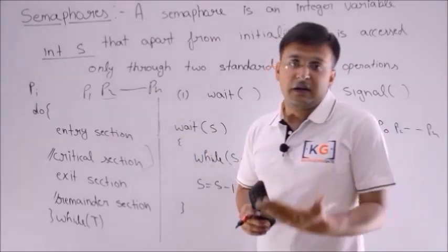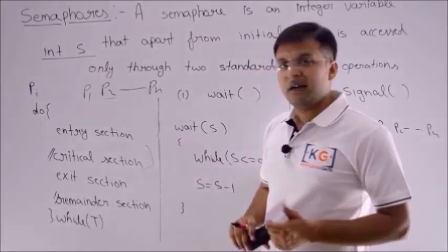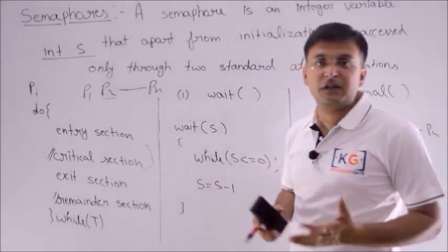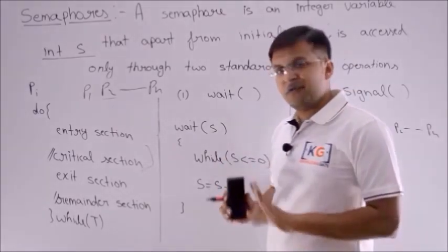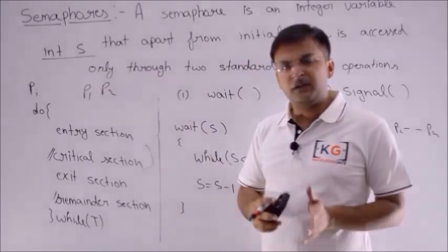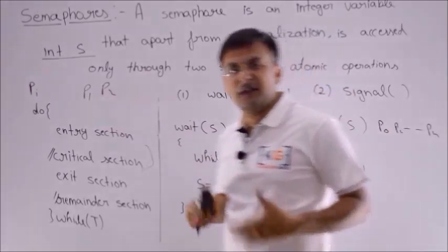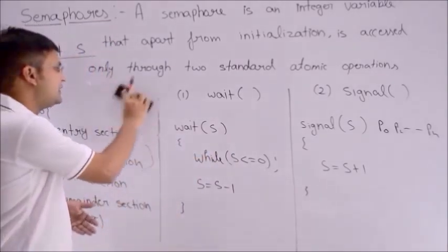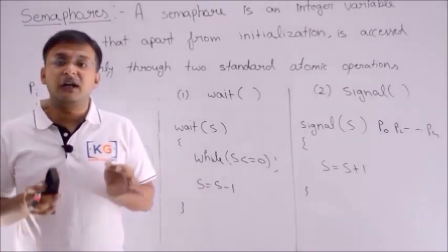To solve this, I tried two or three logics — basically three algorithms. First, we used a turn variable, but progress was not achieved. Then in the second case, I tried flag value, but again we couldn't have progress because the system deadlocked. Third, we discussed Peterson's solution, where we understood it was working well and all conditions were satisfied. But the problem was that it was only confined to two processes — with Peterson's algorithm you can only solve for two processes. But in a general operating system, it's an n-process system, so that is a major problem.